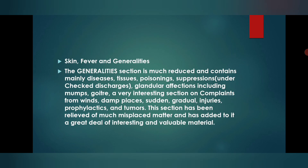Three general chapters are given: skin, fever, and generalities. In the skin chapter, we find all conditions of skin. In the fever chapter, we find different rubrics of chilliness, coldness, heat, and sweat, and also pathological names and clinical terms related to fever. The generalities section is a very well-explained chapter containing general rubrics of different sensations and complaints, but also some very important clinical conditions like poisoning, suppression, prevention, etc.